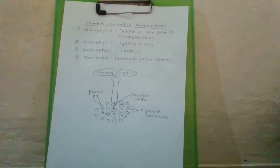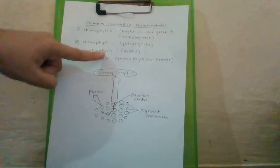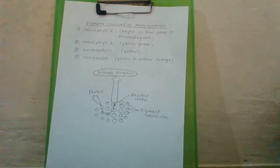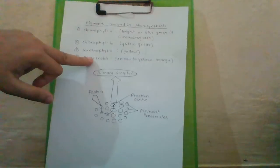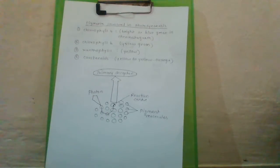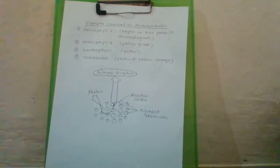Each photosystem has all pigments: chlorophyll A, chlorophyll B, xanthophyll, and carotenoids. All pigments other than chlorophyll A — that is, chlorophyll B, xanthophyll, and carotenoids — are involved in forming the light harvesting system, also called the antenna. These pigments help to make photosynthesis more efficient by absorbing different wavelengths of light.